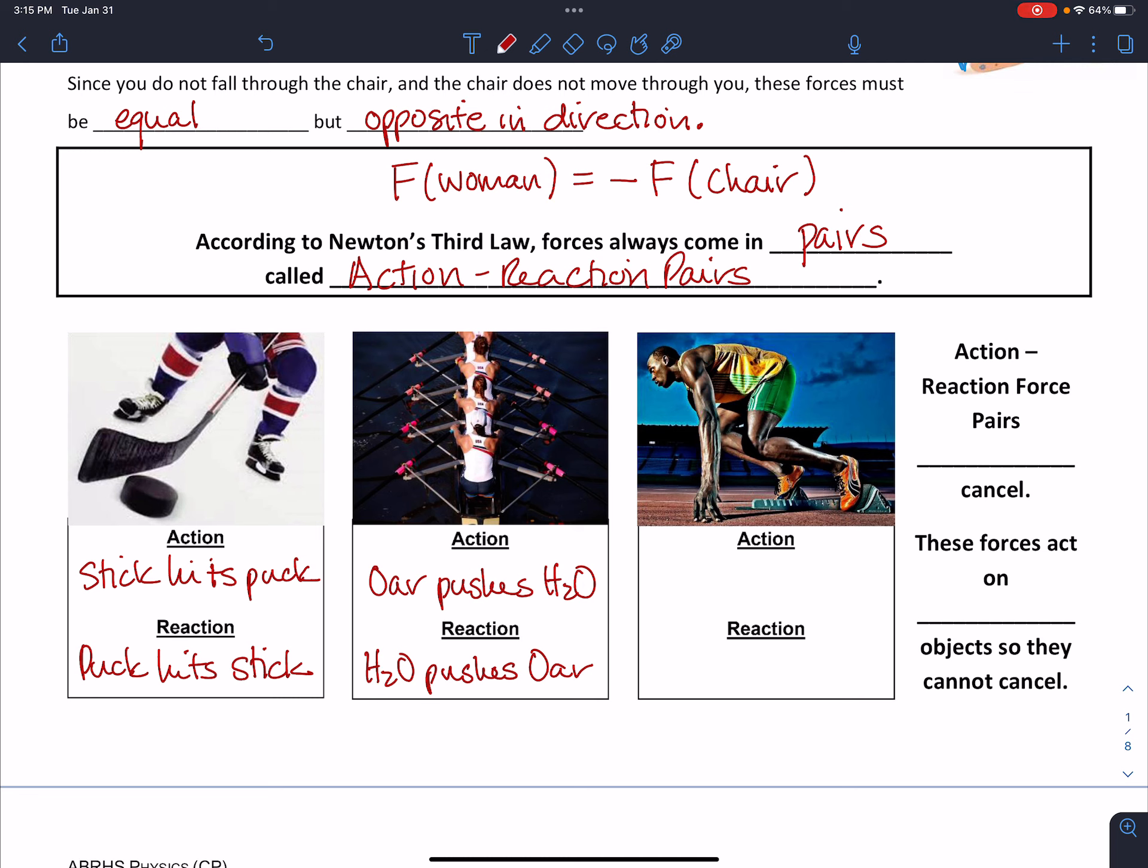We also have a runner, and the runner uses these starting blocks, particularly for sprints. So the runner pushes on that block, and at the same time, the block reacts by pushing on the runner. And since the runner's pushing backwards on the blocks, the blocks react by pushing forward on the runner, which allows them to jump out of the start blocks.